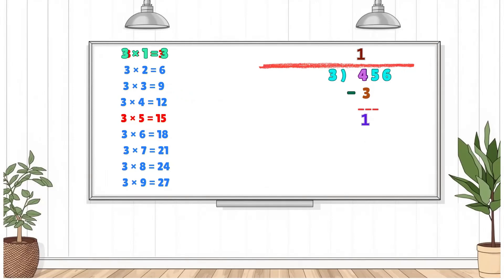Bring down the next digit, 5, to make 15. How many times does 3 fit into 15? It fits 5 times, 3 times 5 equals 15. Place 5 in the quotient above the 5 in 456, calculate 5 times 3 equals 15, write it below, and subtract. 15 minus 15 equals 0.